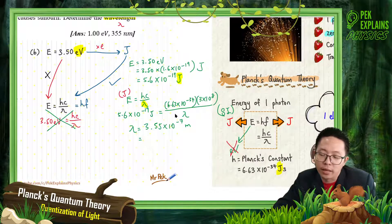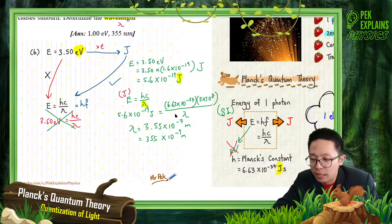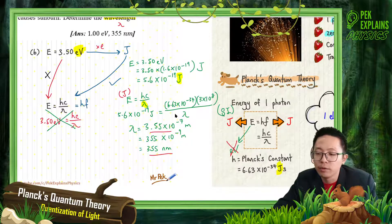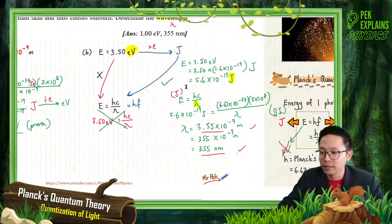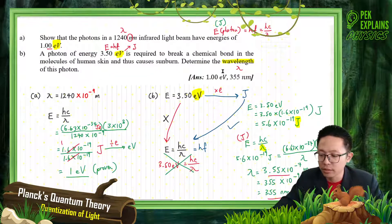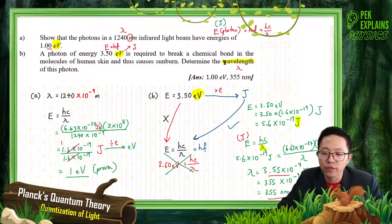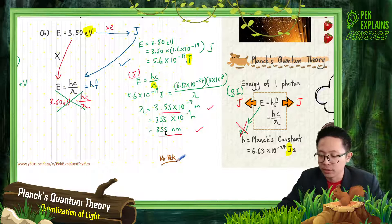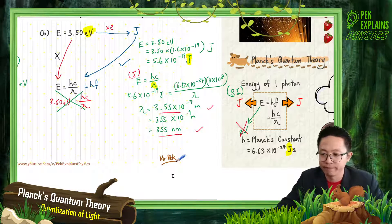If you want to change to nanometers, it becomes 355 nanometers (355 × 10⁻⁹ meters, and exponent negative 9 is nano). So you want to write in meters or in nanometers - both are correct, provided the value is correct. The question didn't specify nanometers, so the wavelength can be in SI units or in nanometers. That's all for this video. I hope you understand. Let's move on to the next one. See you! Bye-bye.